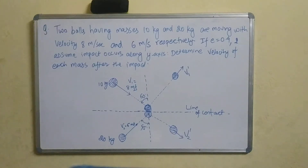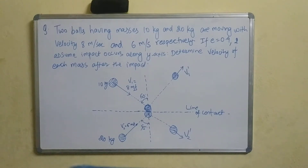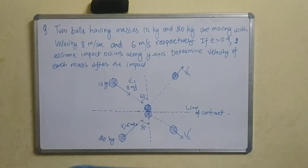Hello, this is a question of oblique impact. This is a simple theory. The question involves 2 objects — 2 balls — with masses 10 kg and 20 kg, having velocities of 8 m/s and 6 m/s respectively.